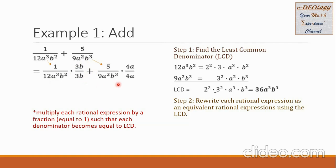For the second rational expression, we want our denominator to equal the LCD. We multiply 9 by 4 to get 36, multiply a² by a to get a³, and b³ already matches. So we multiply the second denominator by 4a, copying 4a into the numerator. The second expression is multiplied by 4a over 4a, which equals 1 and does not change the value.